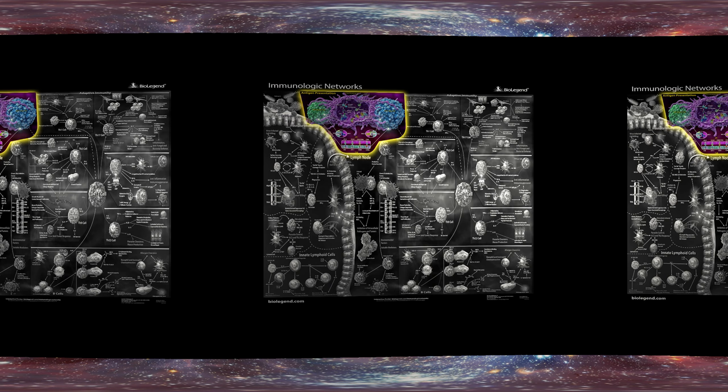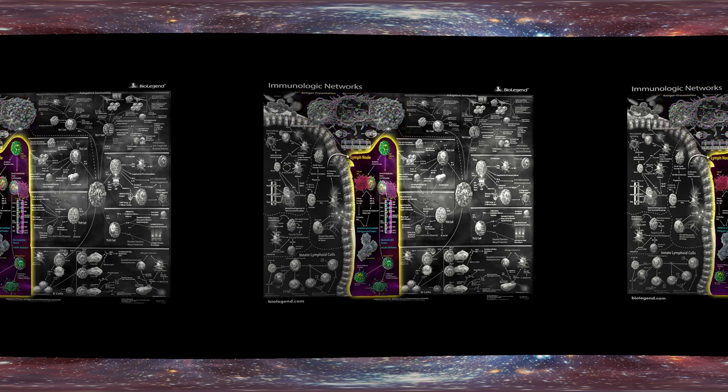Normally, CD8 T cells help destroy tumors and infected cells. However, too much stimulation can also limit an immune response. If T cells are constantly stimulated, either by viruses or by cancer, the T cell can become exhausted, making it less effective in cytokine secretion and proliferation. Exhausted T cells will die unless they're rescued by a blockade of inhibitor receptors like PD-1 and CTLA-4.